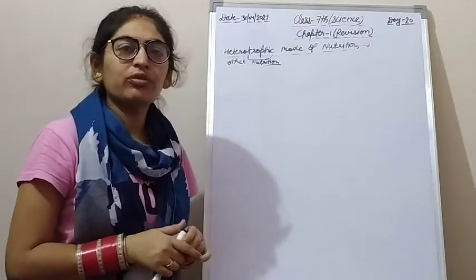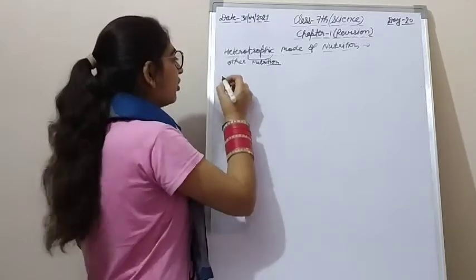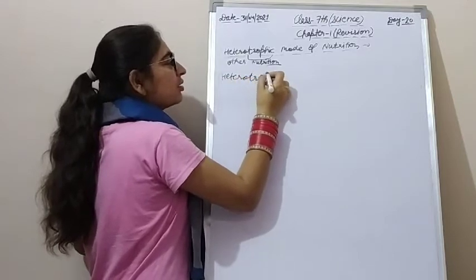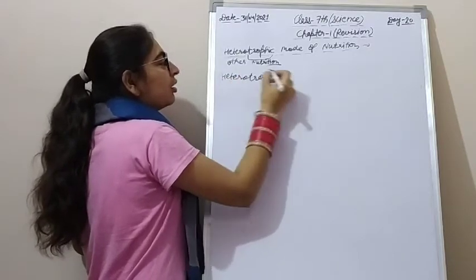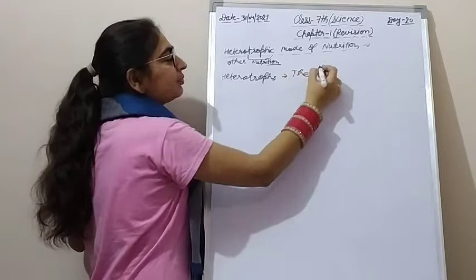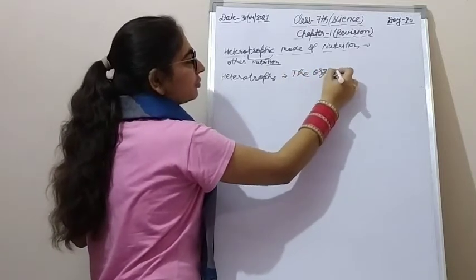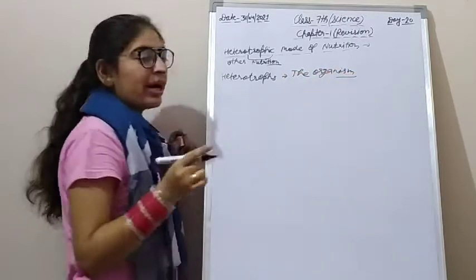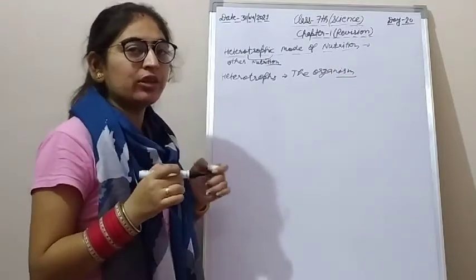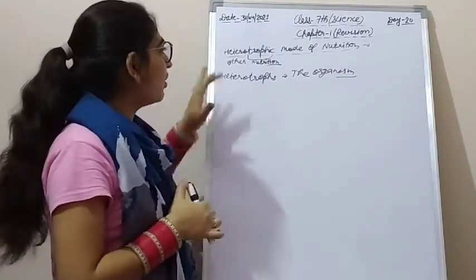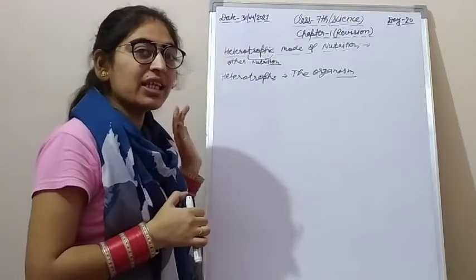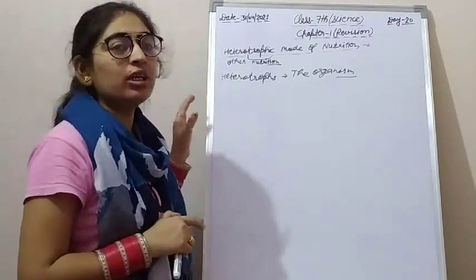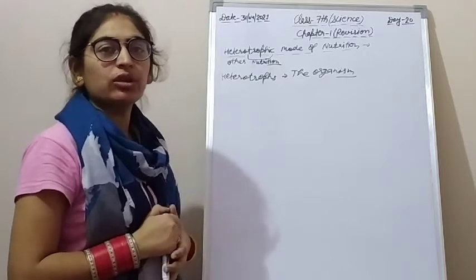Heterotrophic mode of nutrition is the mode in which the organism depends on other plants and animals for their nutrition.